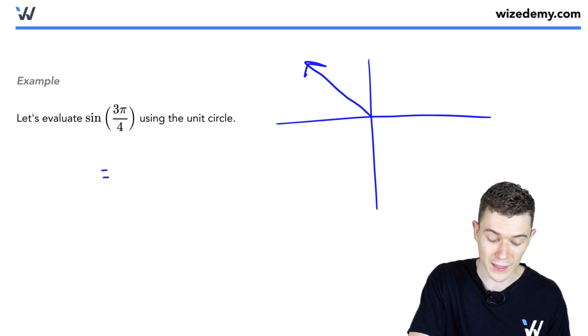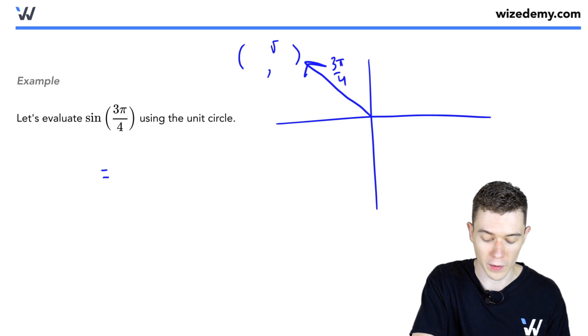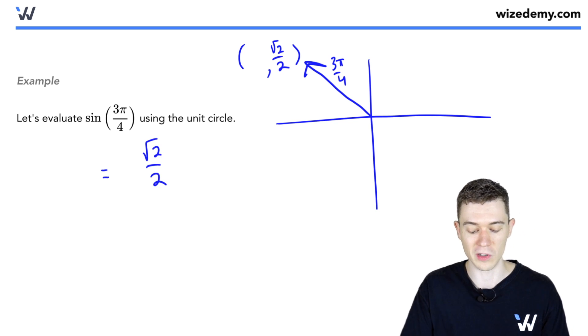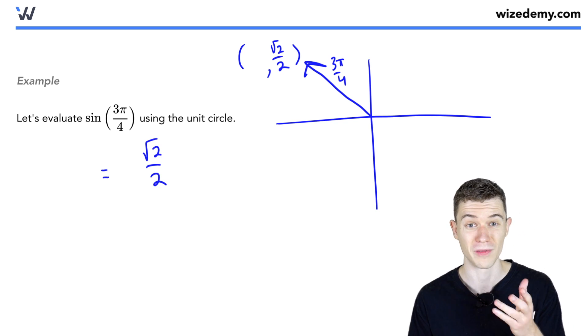And if you were to look at this angle, 3 pi over 4, on the unit circle, we would find the y coordinate to be square root 2 over 2. And that's all we have to do. We'll just pick that value out from the unit circle.